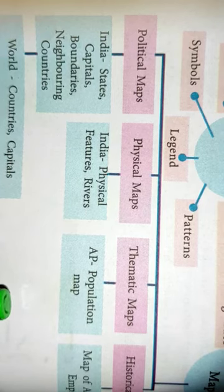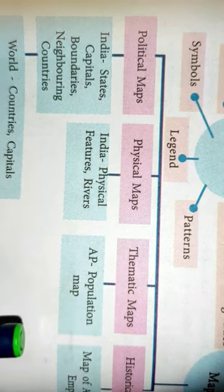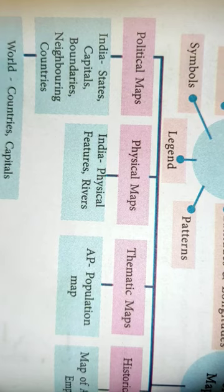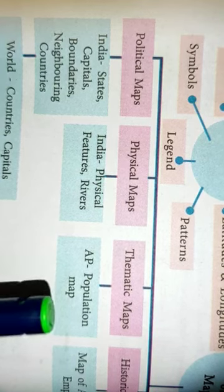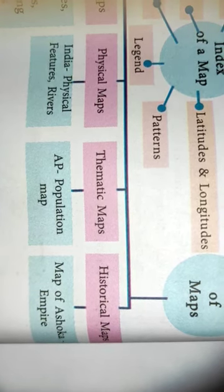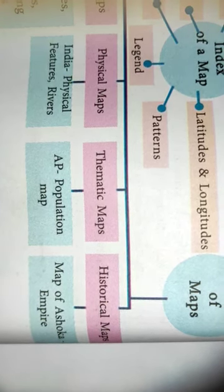The third type is thematic maps. It represents, for example, an A.P. population map. Thematic maps are maps that give information about one specific topic. For example, an Andhra Pradesh population map — a map that tells us only about the population of Andhra Pradesh — is called a thematic map.